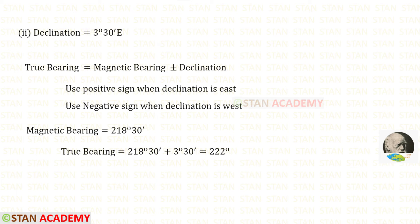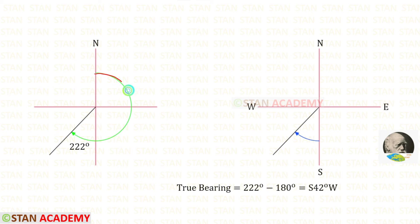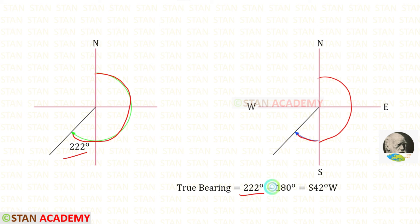Now let us take the declination 3 degrees 30 minutes east. We know that when the declination is east, we use the positive sign. When we add 218 degrees 30 minutes and 3 degrees 30 minutes, we get 222 degrees. Then we convert the whole circle bearing into reduced bearing by subtracting 180 degrees, and we get south 42 degrees west.